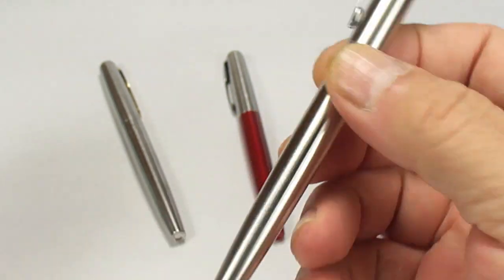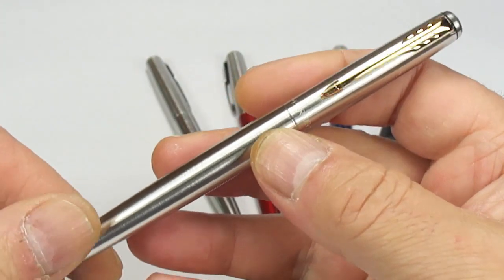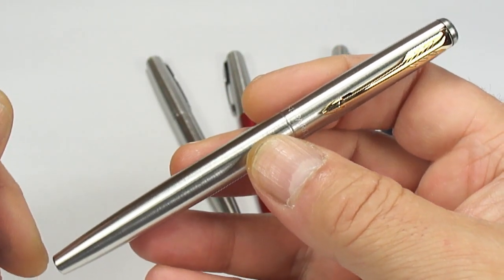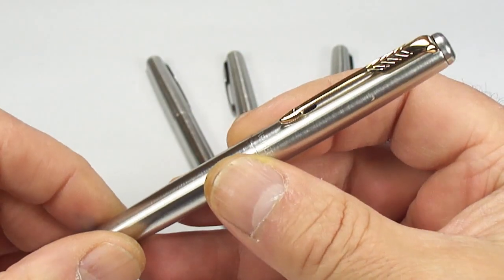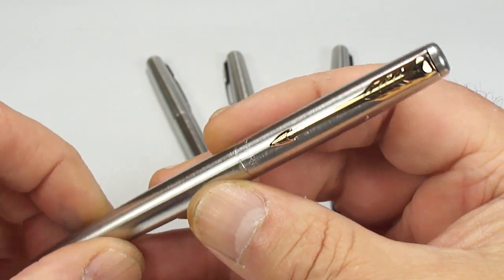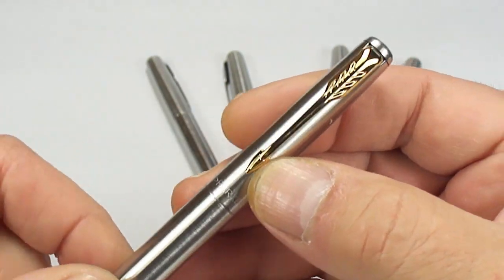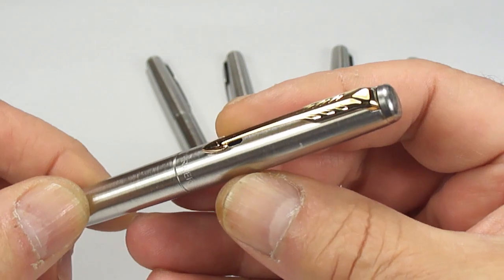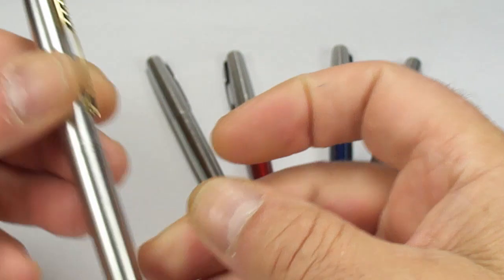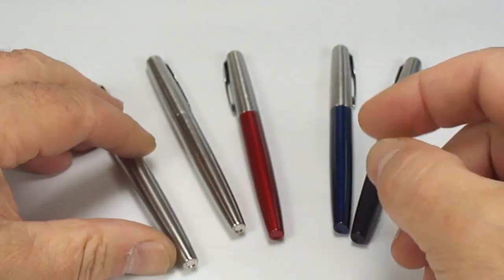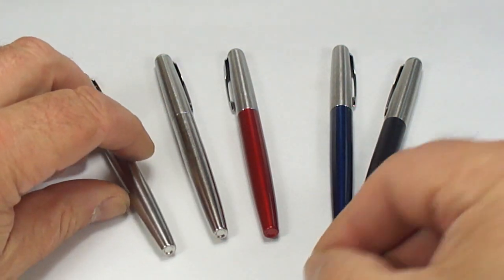And last but not least we have another stainless steel pen, this one being the GT which simply means gold trim. So you can see again a stainless steel pen with a gold clip to the top of the cap there. So that's the five different colors available within the range.